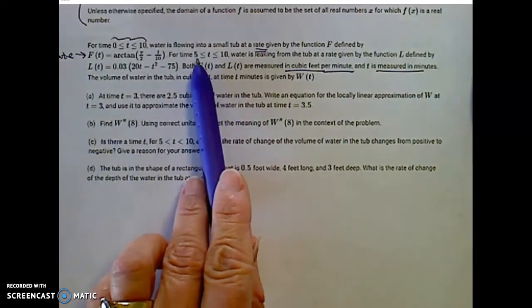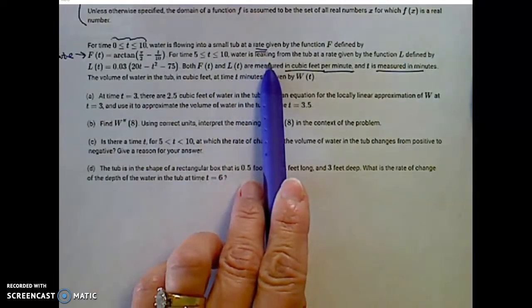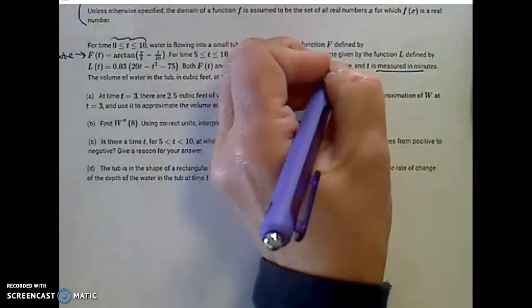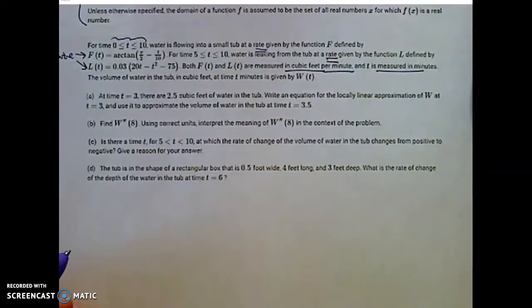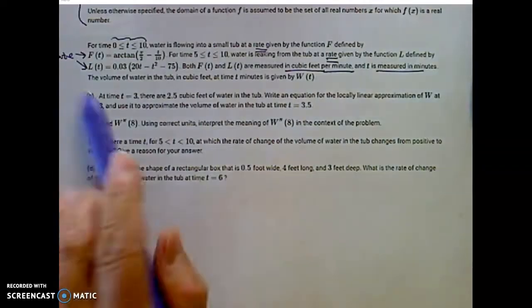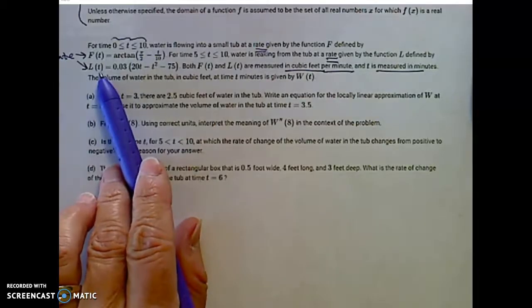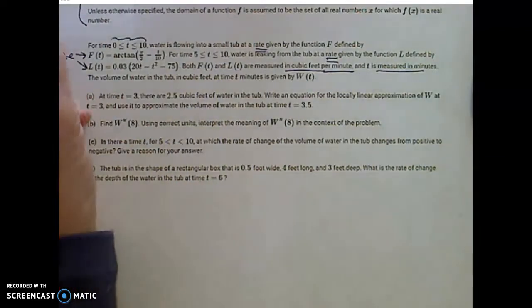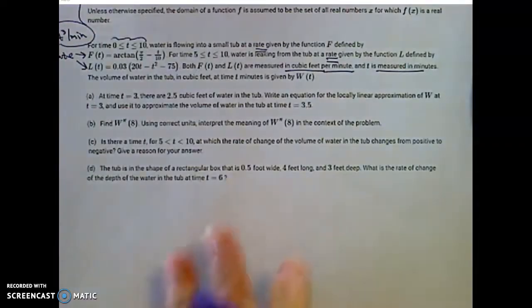From time 5 minutes to 10 minutes, water starts leaking out. L is that function for the rate at which water is leaking out. So notice that's a rate as well. That's the rate that water is flowing in between 0 and 10, and the rate flowing out between 5 and 10.